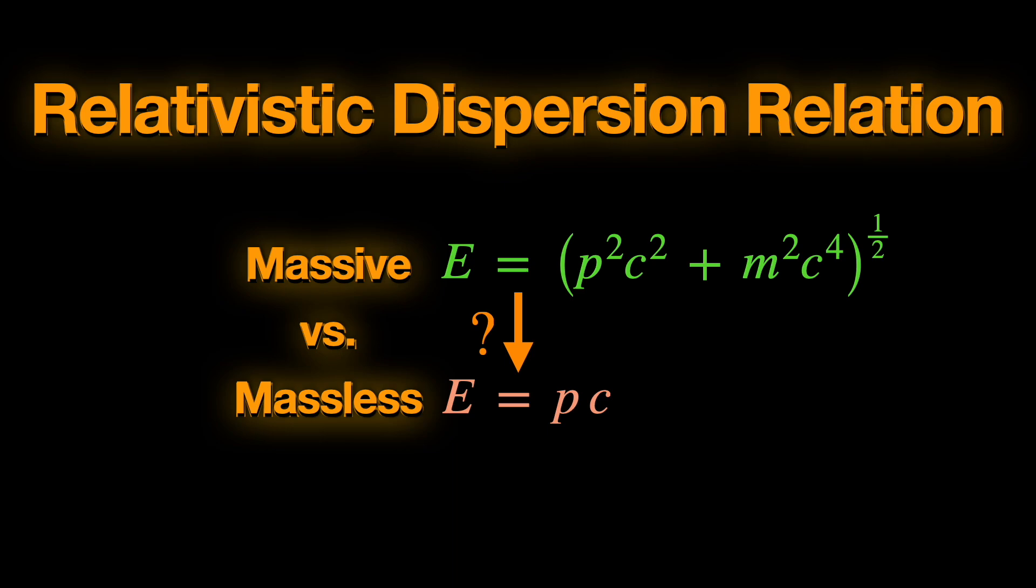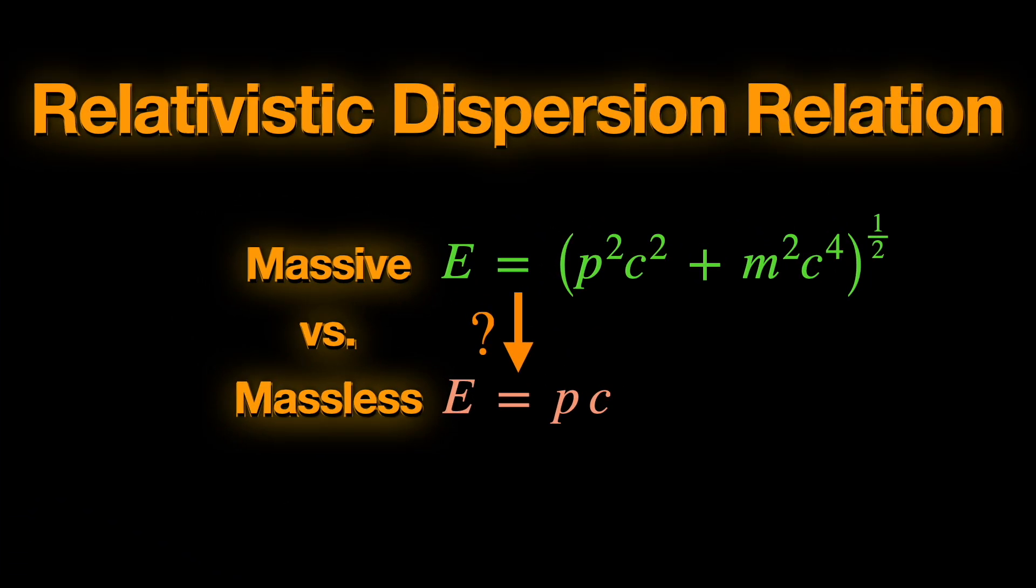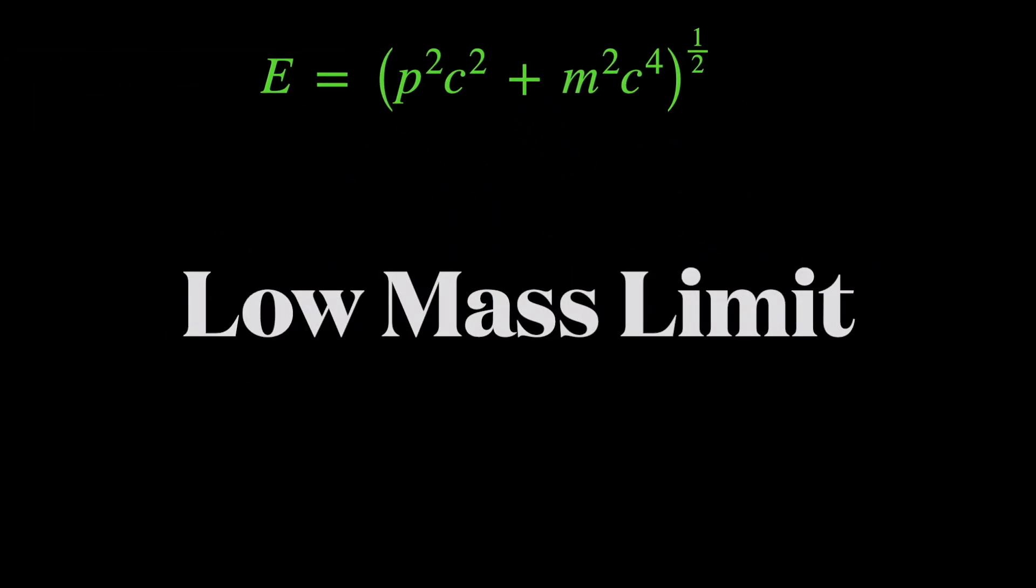We have explained how to derive the relativistic dispersion relation of a massive particle in our last video. You can check it out from the i button. Now, the misuse is in context of the low mass limit of this massive dispersion relation.